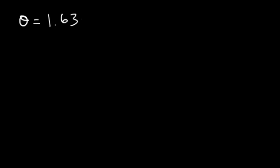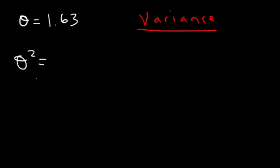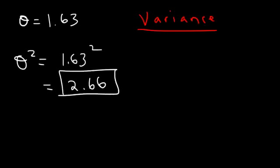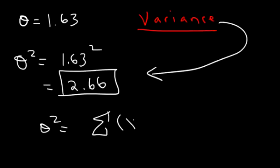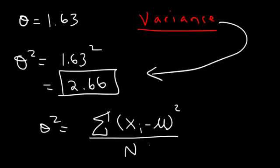Going back to the first example, the population standard deviation is approximately 1.63. Given this, how can we calculate the variance? The variance is simply the square of the standard deviation. So 1.63 squared is about 2.66. The formula for variance is the sum of all the squared differences between every point and the population mean, divided by N — it's basically the same formula as standard deviation without the square root symbol.